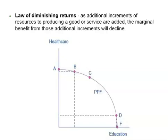For instance, to move from point A to point B, this society has to give up a little healthcare in order to spend on education. To move from point B to point C, or from point C to D, the society gives up a little more healthcare and obtains a little more education. As we add more resources to education, moving from left to right along the horizontal axis, the original gains are fairly large but gradually diminish. If very few resources are currently committed to education, there are not many teachers and schools available, then an increase in resources for education can bring significant improvement.